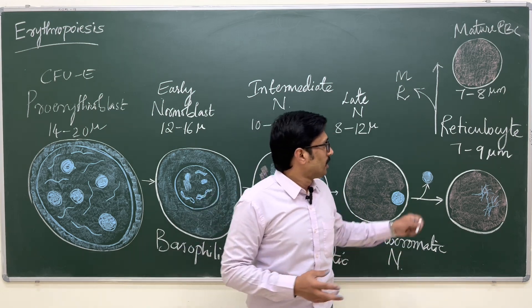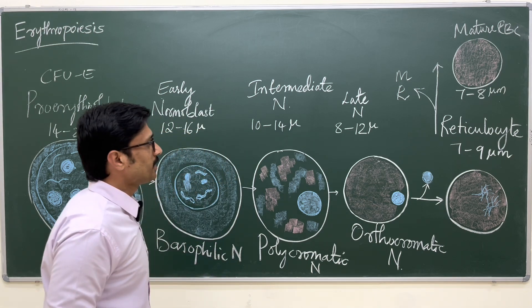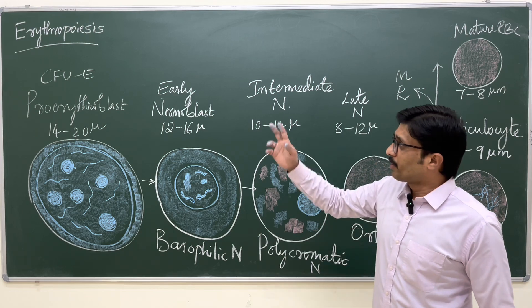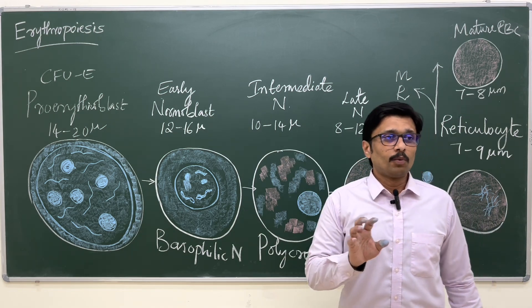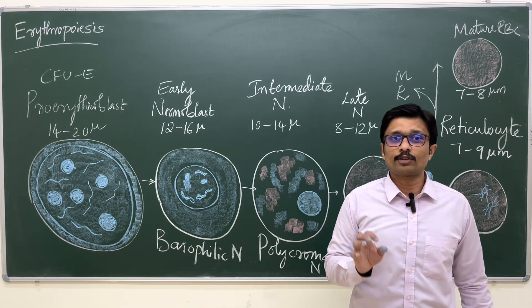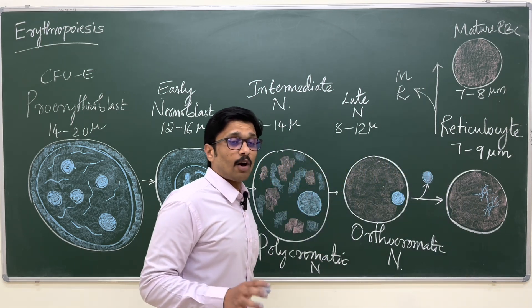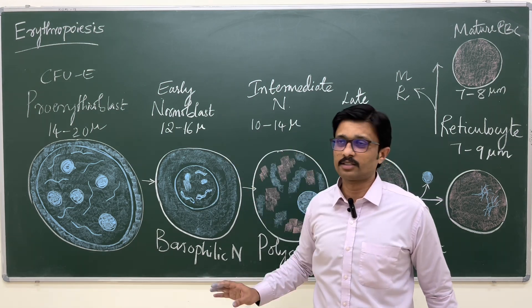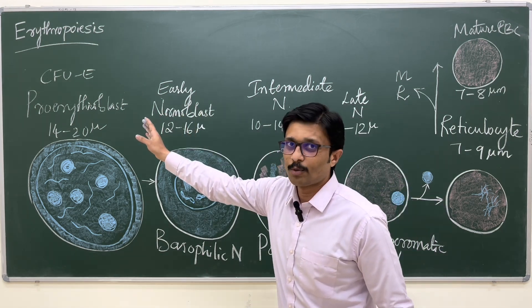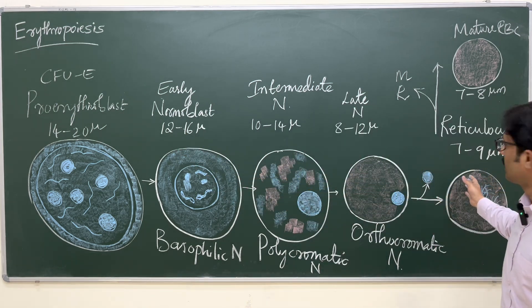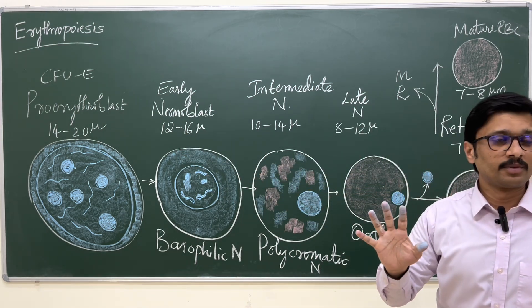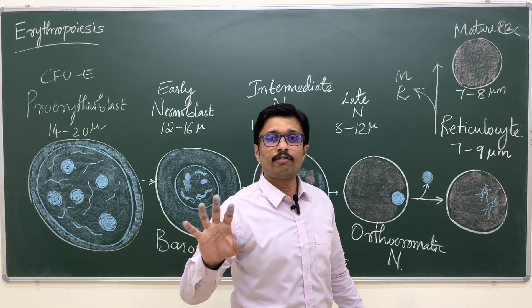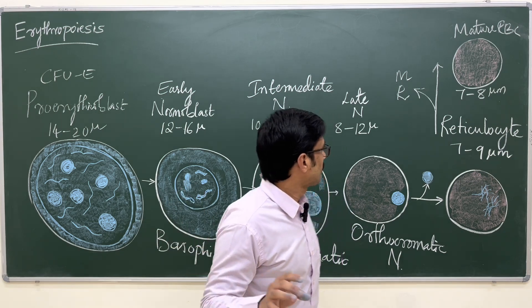Overall, it takes around one week (seven days) to produce red blood cells in the bone marrow from precursor cells. It takes five days for reticulocytes to form from the precursor cells (pro-erythroblast), and two more days for the reticulocyte to mature into a final mature red blood cell.